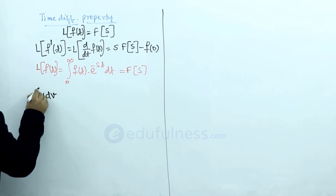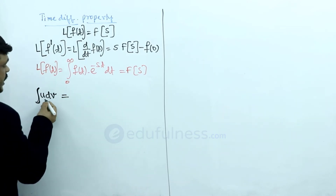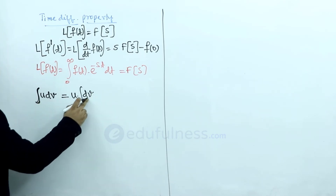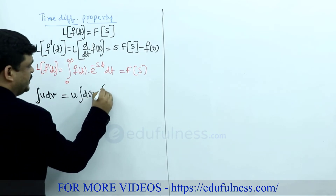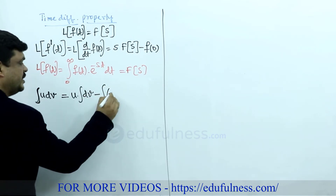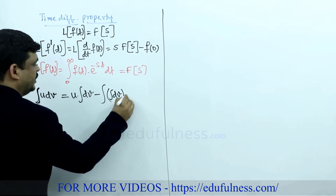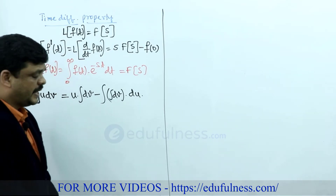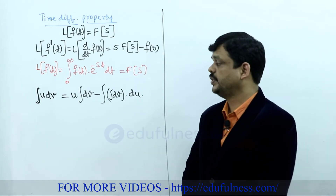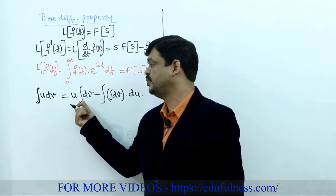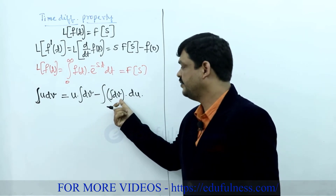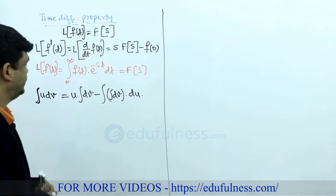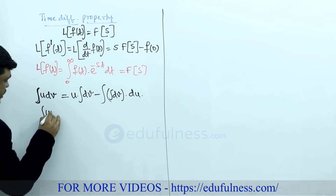The standard integration formula is: integral of u dv = u into integral of dv, minus integration of (integral of dv) times du, where du is the differentiation of u. This is the standard mathematics equation. Sometimes in textbooks the same equation is written as integration of u·v, with a similar structure of alternating signs.